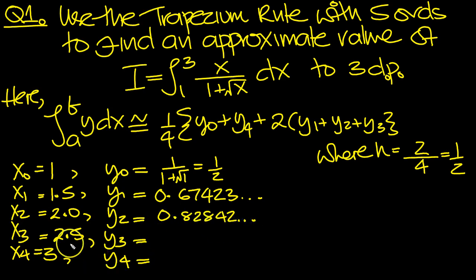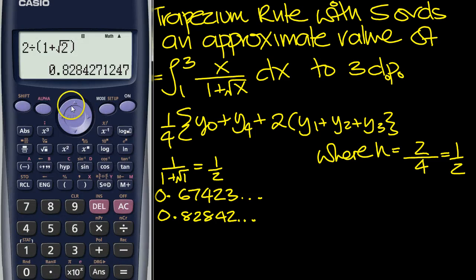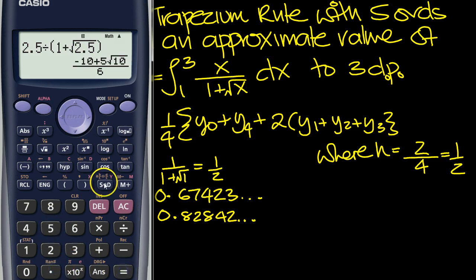And then y3. We put 2.5 in instead of 2. Here and the other place at the front. 2.5 equals 0.96856.